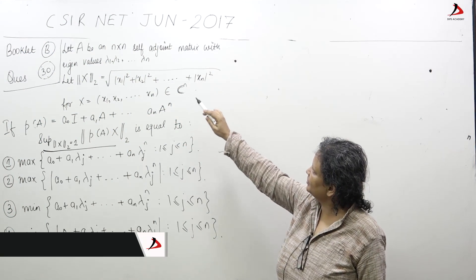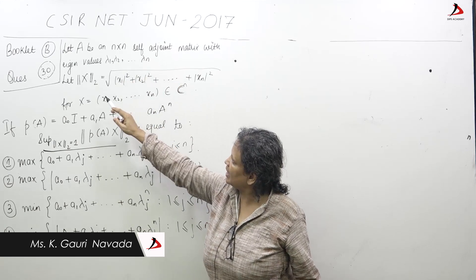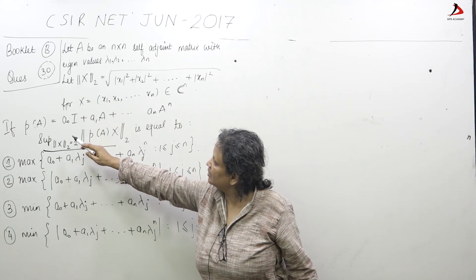Let A be a matrix, so A is given to be a self-adjoint matrix with eigenvalues lambda 1 up to lambda n, and this is the L2 norm on C n.